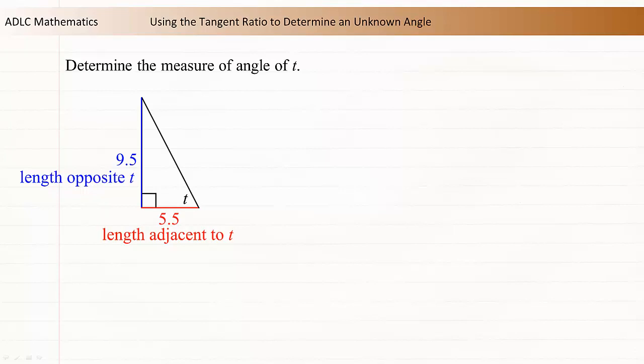Now that we know the side relationships between the sides and angle t, we can write the tangent ratio. The tangent of t is equal to the length opposite t divided by the length adjacent to t. The length opposite t is 9.5 and the length adjacent to t is 5.5.